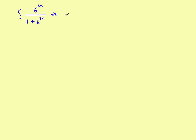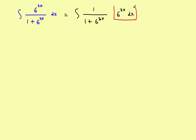With that in mind, we rewrite the problem as the integral of 1 over (1 plus 6 to the 3x), times 6 to the 3x dx. In the u-substitution, we're trying to eliminate the 6 to the 3x dx part. So we let u equal the denominator: 1 plus 6 to the 3x.